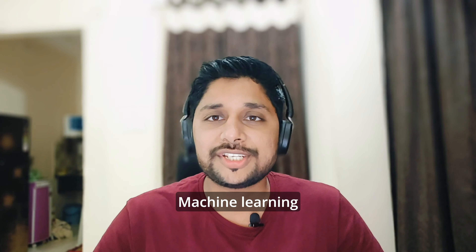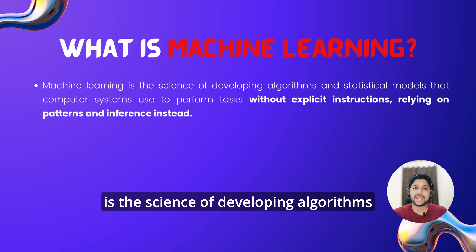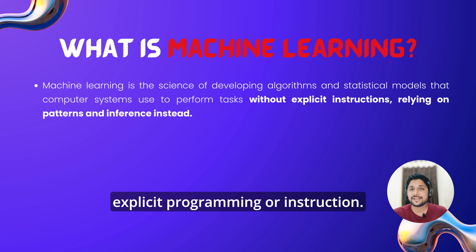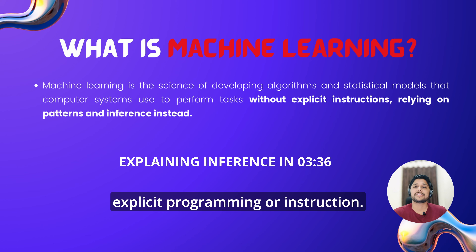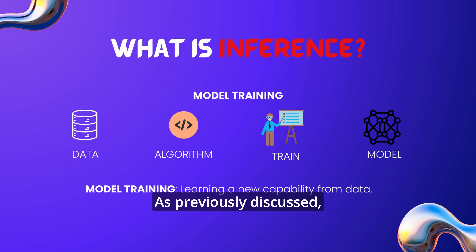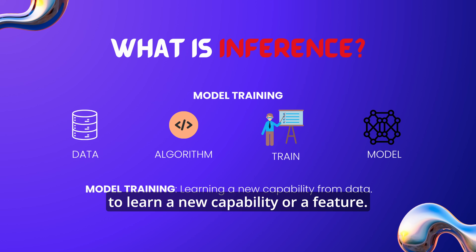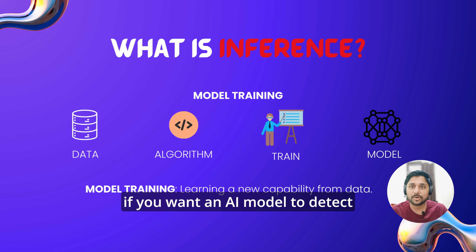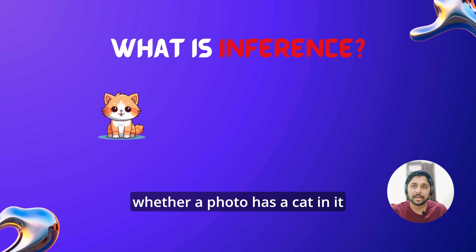While all machine learning activities are AI, not all AI activities can be called machine learning. Thus in mathematical terms, we can say that ML is a subset of AI. Machine learning is the science of developing algorithms and statistical models that computer systems use to perform tasks without explicit programming or instructions, instead relying on patterns and inference.